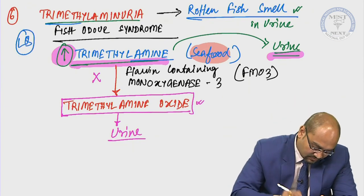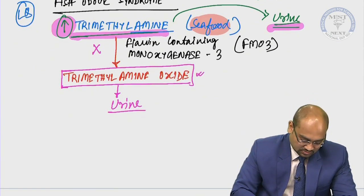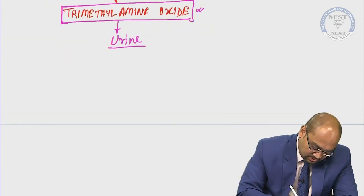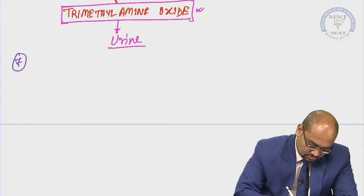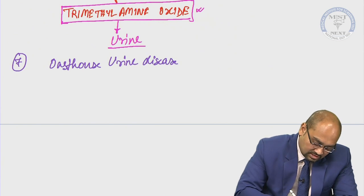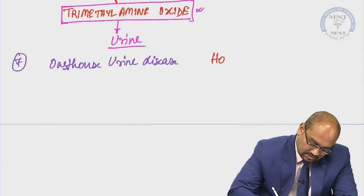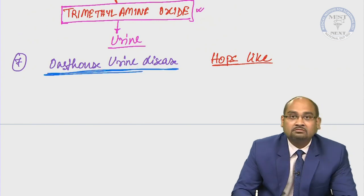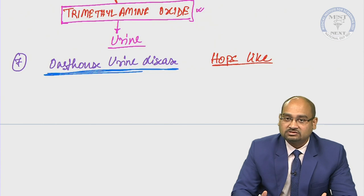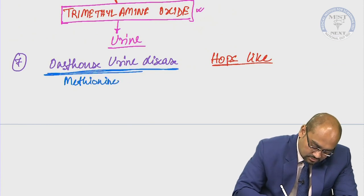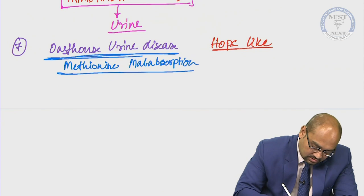This is another latest question that has surfaced in exams. The seventh disorder is Osthouse urine disease. Here the smell will be basically hops-like. This particular disorder is associated with methionine malabsorption and is also known as Smith-Strang disease.